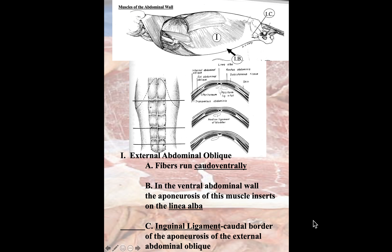We'll start with the first muscle, which is the external abdominal oblique. This one extends from the costal area and the lumbar region. We can see that its fibers run in the caudal-ventral orientation. The external oblique has two parts — one starting from the costal region and one from the lumbar region. This muscle has an aponeurosis, which inserts into the linea alba.